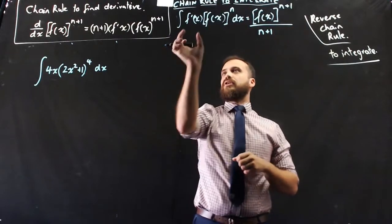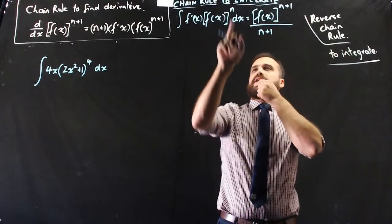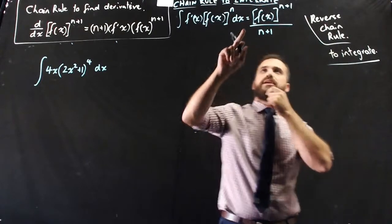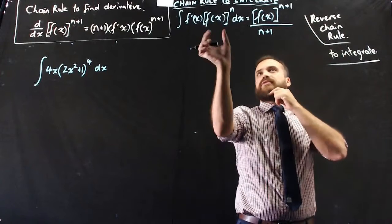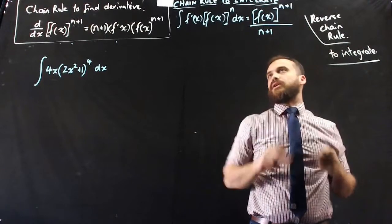The integral of f dash x times f of x to the power of n with respect to x is equal to f of x to the power of n plus 1 divided by n plus 1.